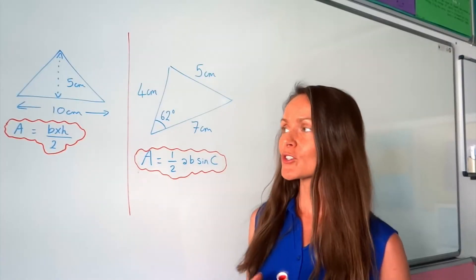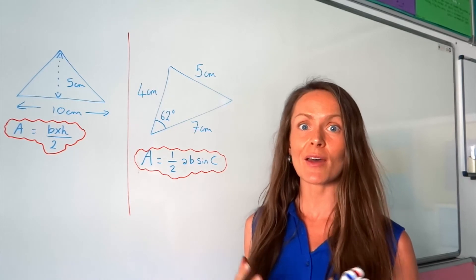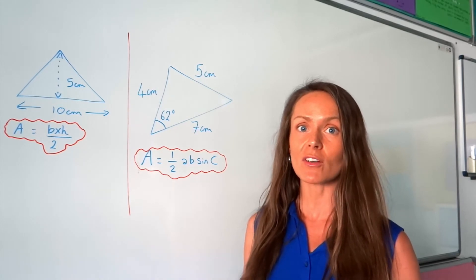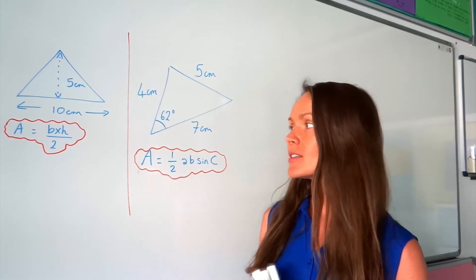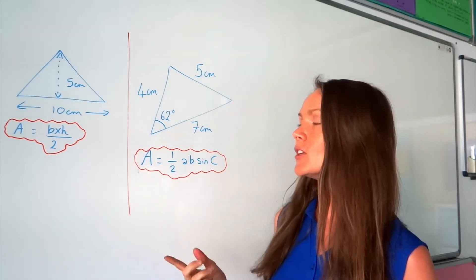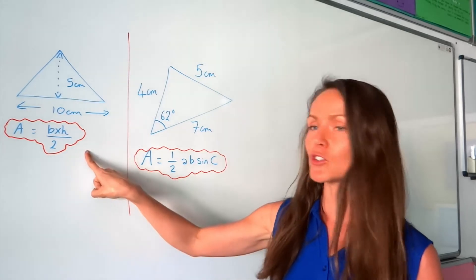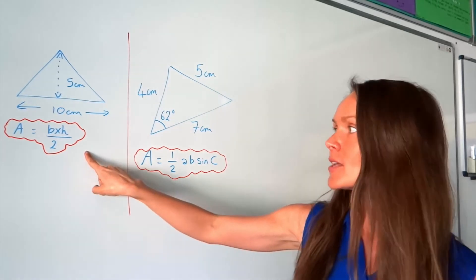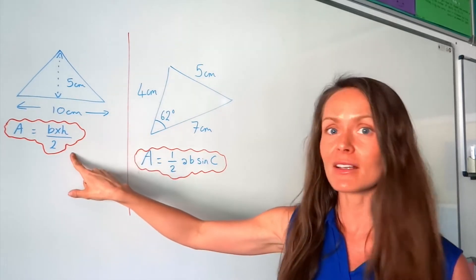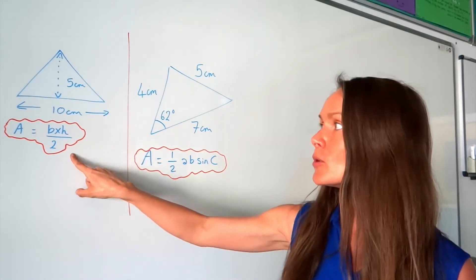Today I'm going to show you how to work out the area of a triangle. Hopefully you already know how to work out the area of a triangle like this: base times height divided by 2.